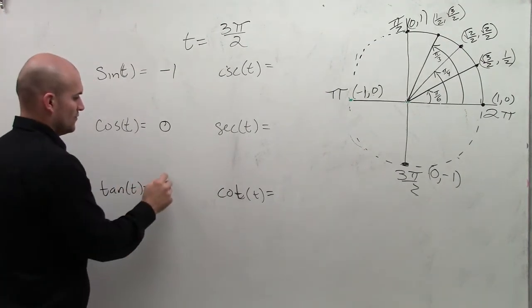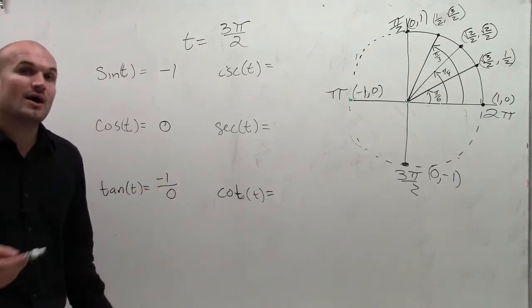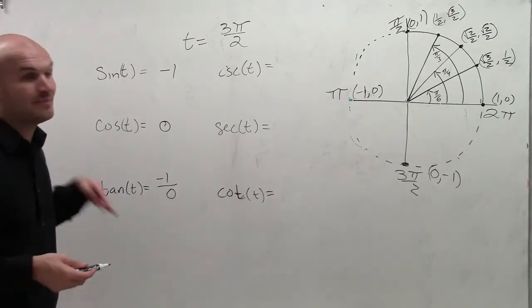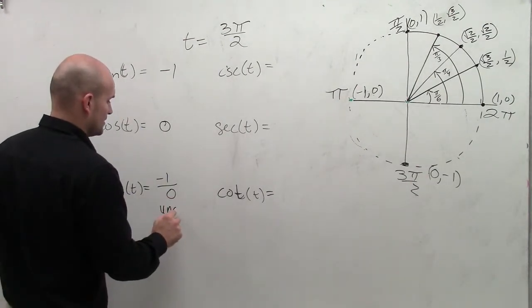Tangent represents y over x. When we have y over x, we have -1 divided by 0, which is undefined.